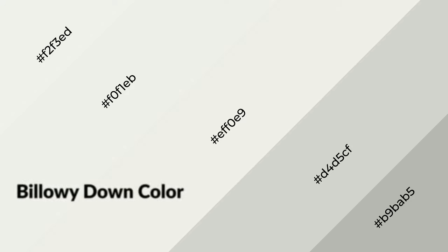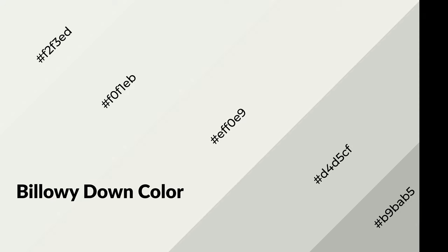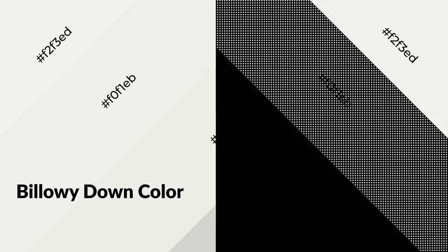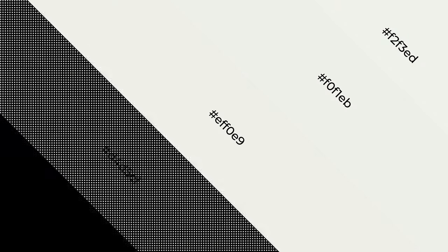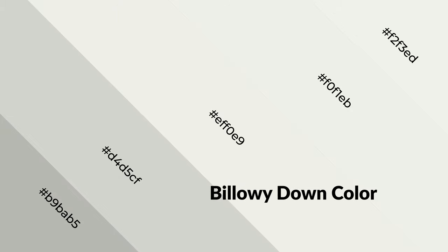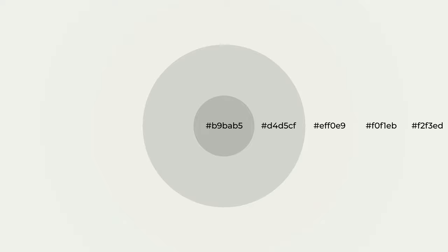Billowy down is a warm color and it emits cozier and active emotions. Warm colors are symbols of warmth, fire, heat, and sunshine. It also evokes joy, passion, love, and even anger. You can see them used in restaurants and gyms.